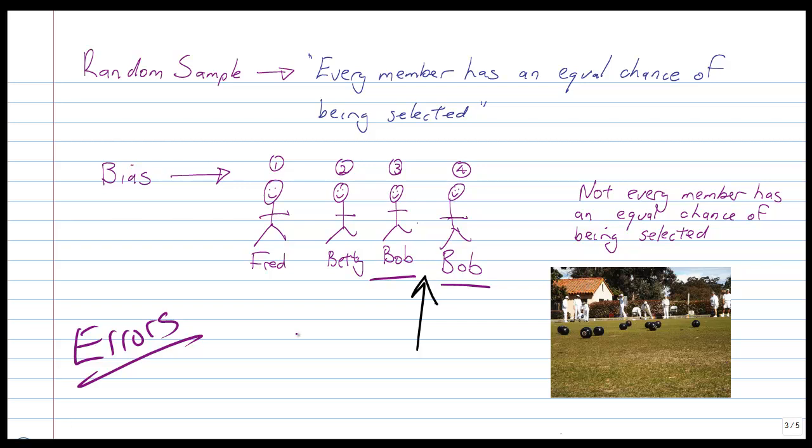So, if you think of bias as lawn bowls, when you get a lawn bowl, if you roll it down, it doesn't go straight. It goes one way or the other way. What we're looking for is like a 10-pin bowling ball that goes straight, and you only get that if every member of the population has an equal chance of being selected.